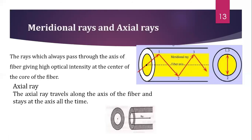There are two classes of meridional rays: bound rays and unbound rays. Bound rays are rays that are trapped inside the core and propagate along the fiber axis. Unbound rays are rays that get refracted out of the fiber core. The final type is the axial ray.